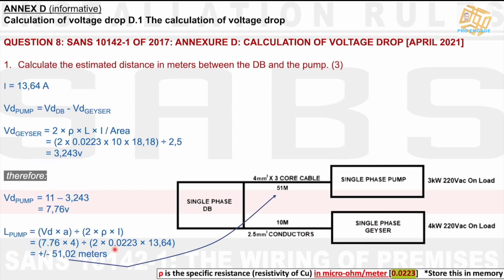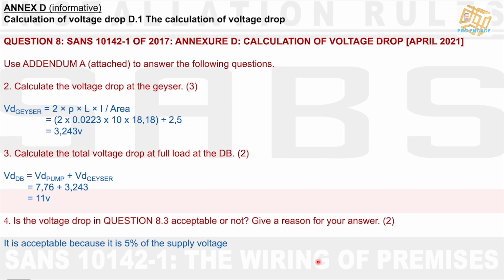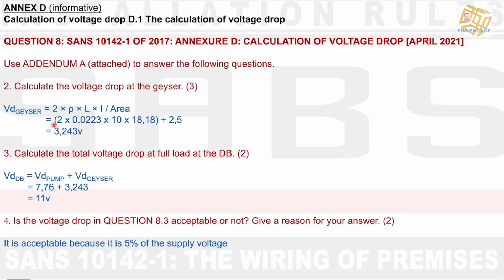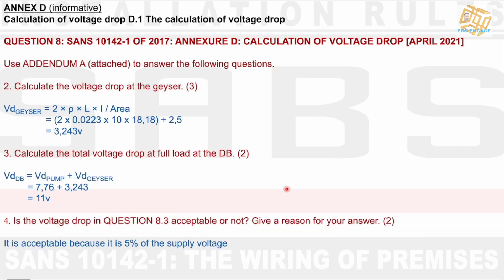That 51 meters is the estimated distance between the DB and the pump. You can substitute it back into the formula to verify the voltage drop. Moving to question 8.2, which uses Annexure A (the attached table): calculate the voltage drop at the geyser. We've already calculated this as part of 8.1. It equals 3.24 V — essentially we were killing two birds with one stone.